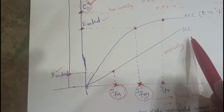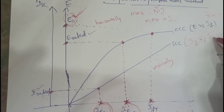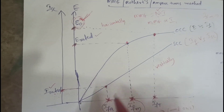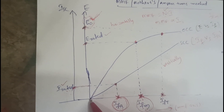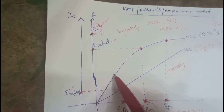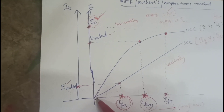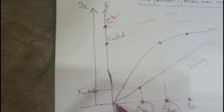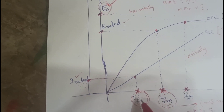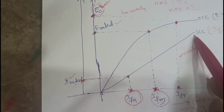The SCC characteristics are drawn between field current versus short circuit current ISC. First, draw the OCC curve: initially field current is zero, so induced EMF is also zero. As field current increases, induced EMF also increases. For the SC test, apply the short circuit current, note down the field current, and from these values draw the short circuit characteristics.